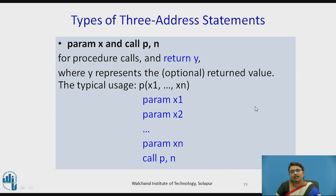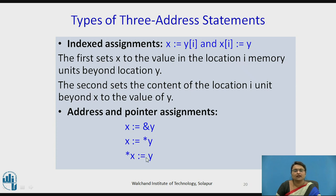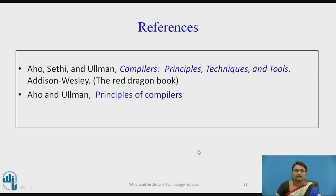For parameter and function calls: param x and call p, n — where p is the function and n is the number of parameters. All parameters are declared and then the call is made. Next is indexed assignment: x = y[i] or x[i] = y, which is simple indexing. Finally, address and pointer assignments use the address operator, pointer operator, and value assignment. These are the types of three-address code statements. Thank you.